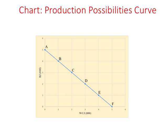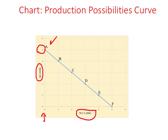Here I have plotted the information from the production possibilities schedule. Western Cut Jeans in thousands are on the horizontal axis and Baggy Jeans in thousands are on the vertical axis. When Mark produces no Western Cut Jeans the maximum Baggy Jeans is 5,000, giving us point A. When he produces 1,000 Western Cut Jeans the maximum is 4,000 Baggy Jeans. We plot points A, B, C, D, E, and F in this way. Joining these points gives us a curve called the production possibilities curve.